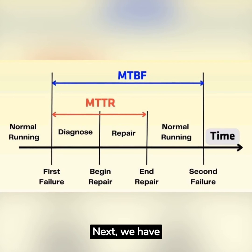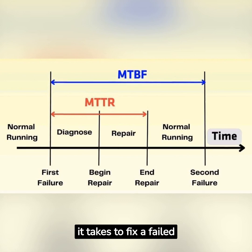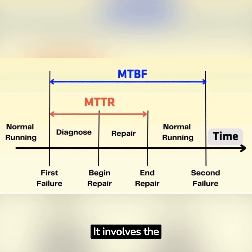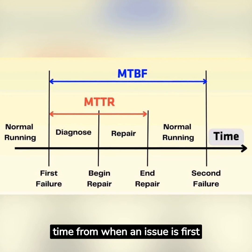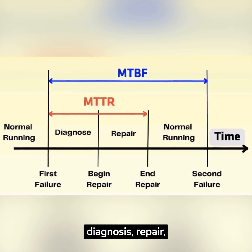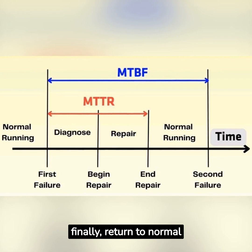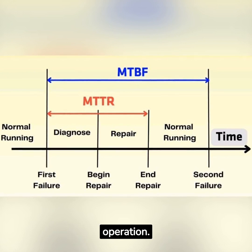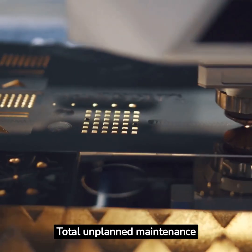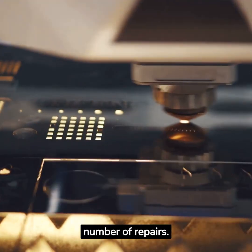Next, we have MTTR, or mean time to repair. This is the average time it takes to fix a failed component or system. It involves the time from when an issue is first identified, through diagnosis, repair, testing, and finally return to normal operation. MTTR is total unplanned maintenance time divided by total number of repairs.